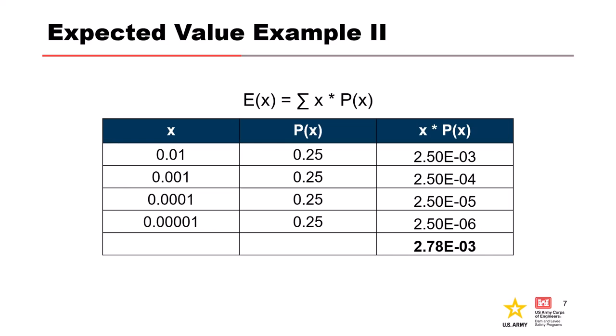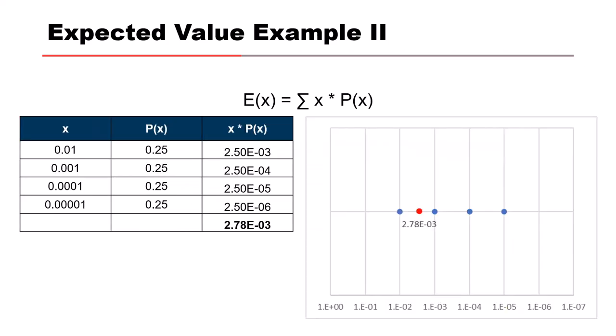Even though we're spanning several orders of magnitude, since the probability of each of these events is equally likely, we're weighting it towards whichever value is largest. In this case, the 0.01 has the most amount of influence on our answer. Great, now you guys all know how to calculate expected values.